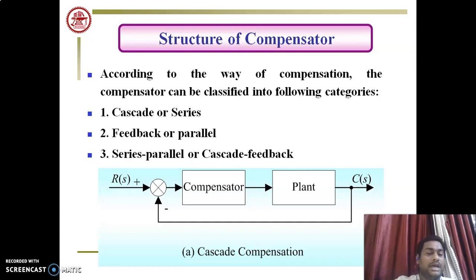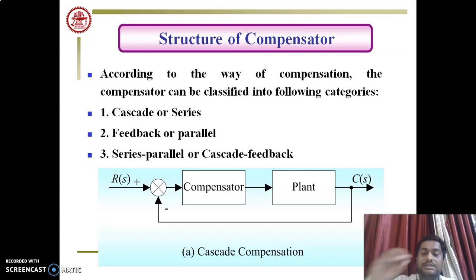The compensator is connected in such a way that the plant operates properly during normal steady-state conditions and also during abnormal or transient conditions. The compensator connected in series with the plant makes the system more stable. This technique is called cascade compensation.